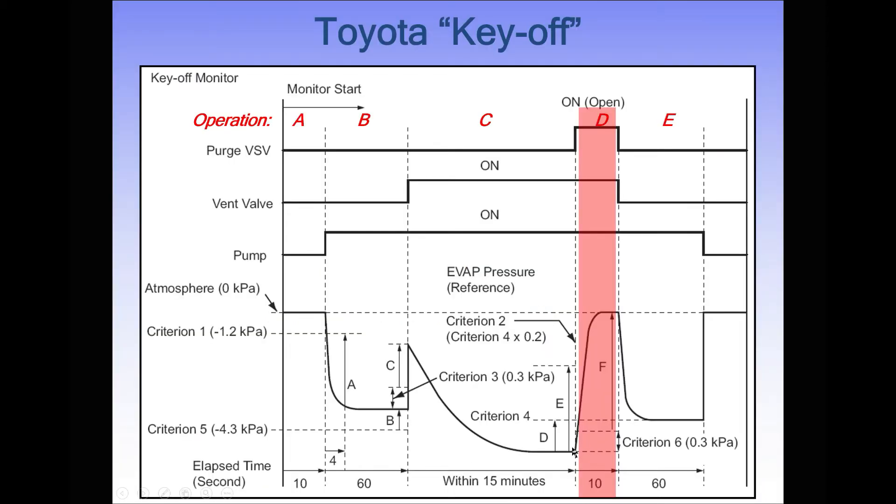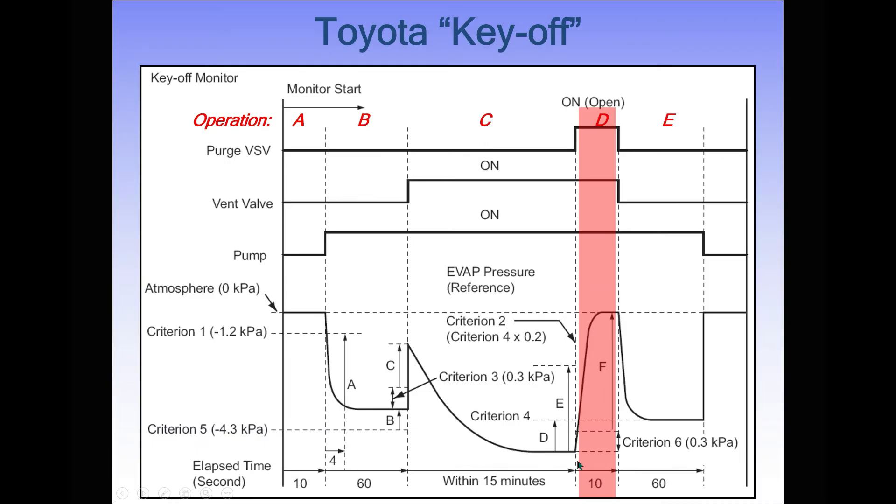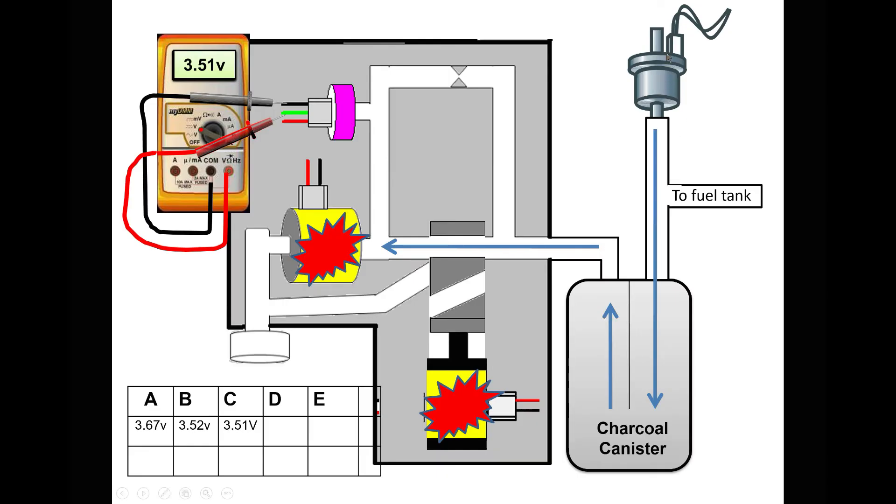Now we have to check the purge valve. Purge valve turns on, it's going to vent the vacuum in the tank. Because the engine's not running, fresh air is going to pull in through the charcoal canister and have access to my fuel tank pressure sensor. Fresh air now enters the system. I know the purge valve turned on, so we just checked its operation.